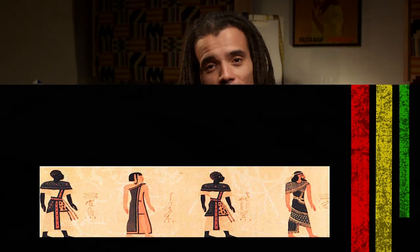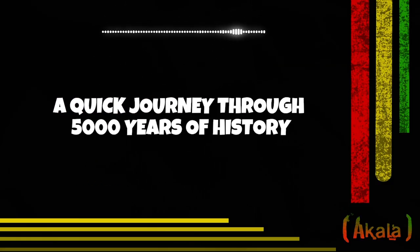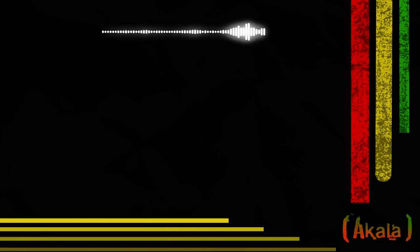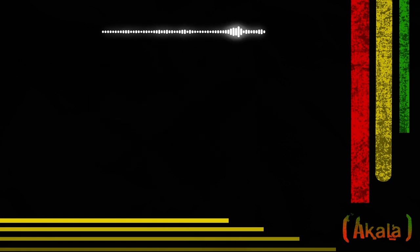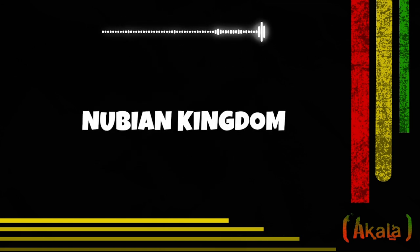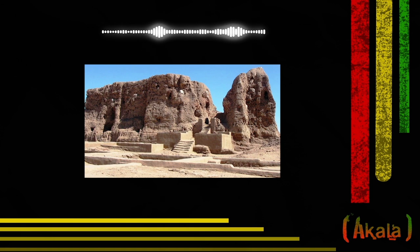But outside of ancient Egypt there are a whole host of civilizations and societies throughout Africa prior to European colonialism, and that's really what we're going to be looking at over the next few minutes — a quick journey through 5,000 years of history. First you have the region of Africa that today is Sudan, with a range of civilizations in what some people call Nubia, including the ancient Nubian kingdoms of Meroe and Napata.